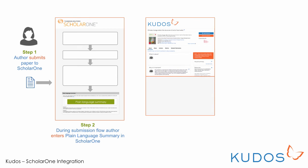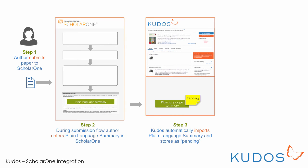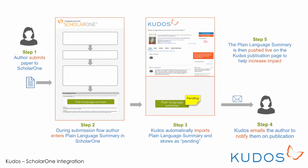Then, QDOS automatically pulls across these plain language summaries from ScholarOne and stores them in QDOS until the point at which the article is actually published live. At that point, QDOS automatically sends the author an email notifying them that their plain language summary is ready, and that plain language summary is pushed live on the QDOS publication profile page, helping to make that article easier to find and understand, and ultimately helping to increase its impact.